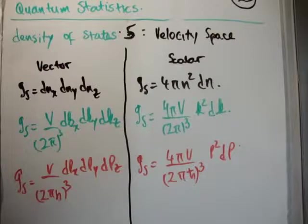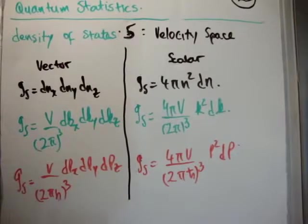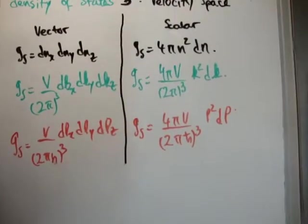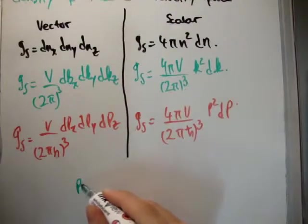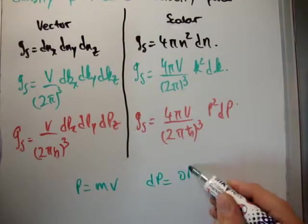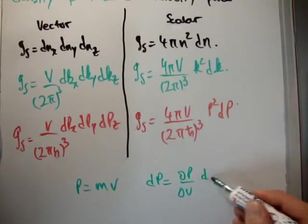Now how do we go from momentum to velocity? Well, it's pretty straightforward because we know that p is equal to mass times velocity. p equals mv. So dp is equal to del p, del v, dv.